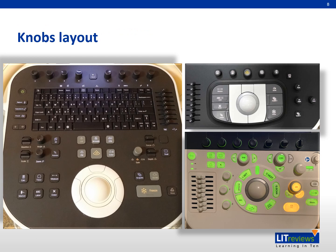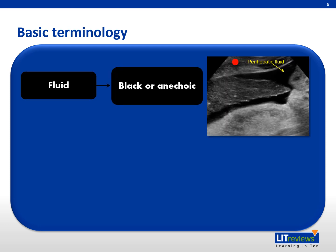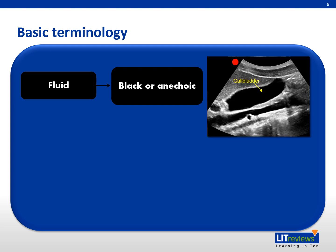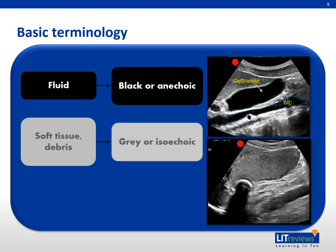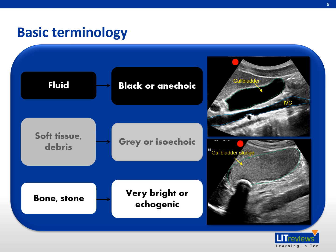Be familiar with the layouts of the knobs in different ultrasound machines. Before the FAST scan, the following are important to know: fluid appears black or anechoic in relation to adjacent structures. Free fluid is not encapsulated, unlike bile within the gallbladder and blood within the vessel lumen. Soft tissue or debris appears grey or isoechoic, similar to sludge within the gallbladder. Bone and stone appears very bright or echogenic, just like a gallbladder stone.